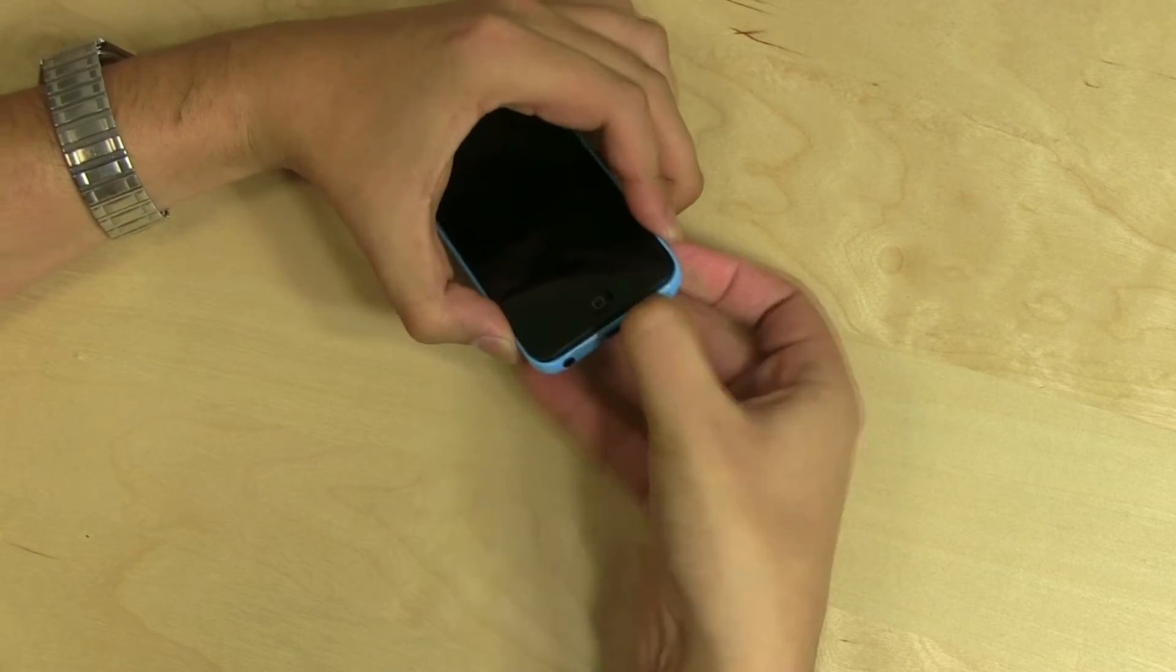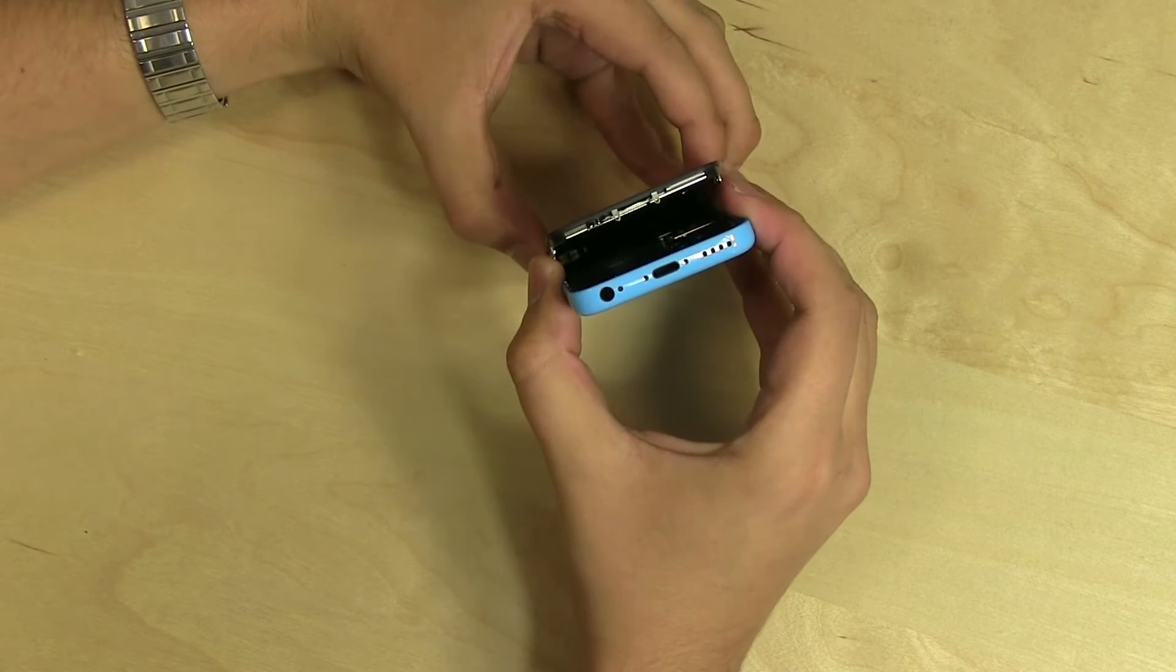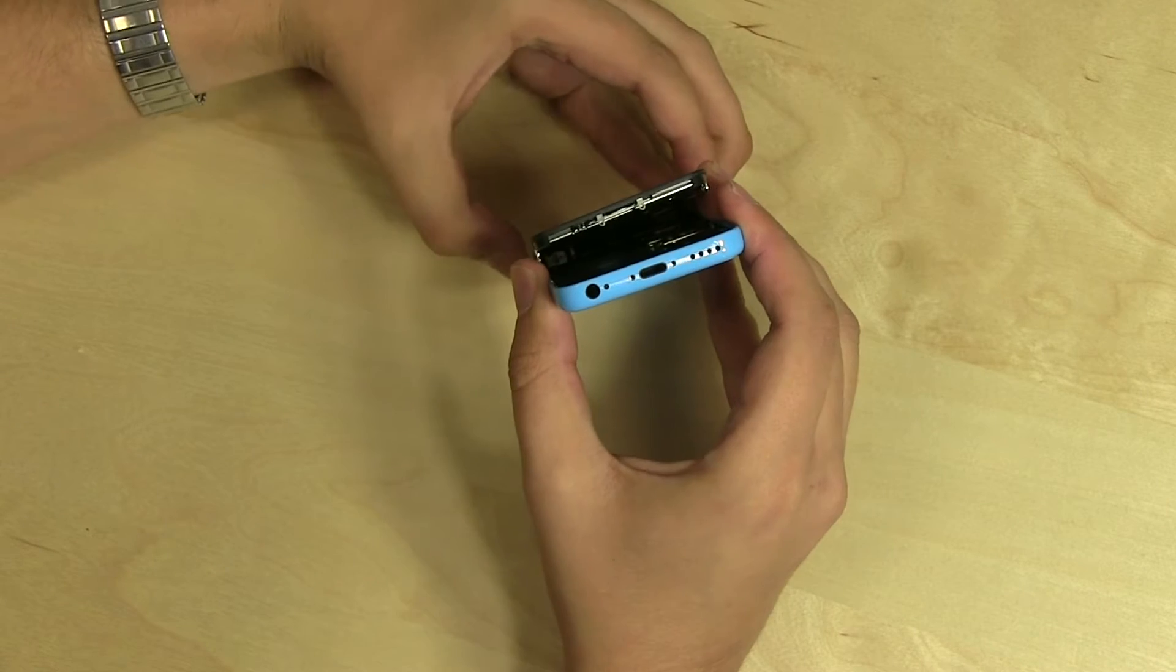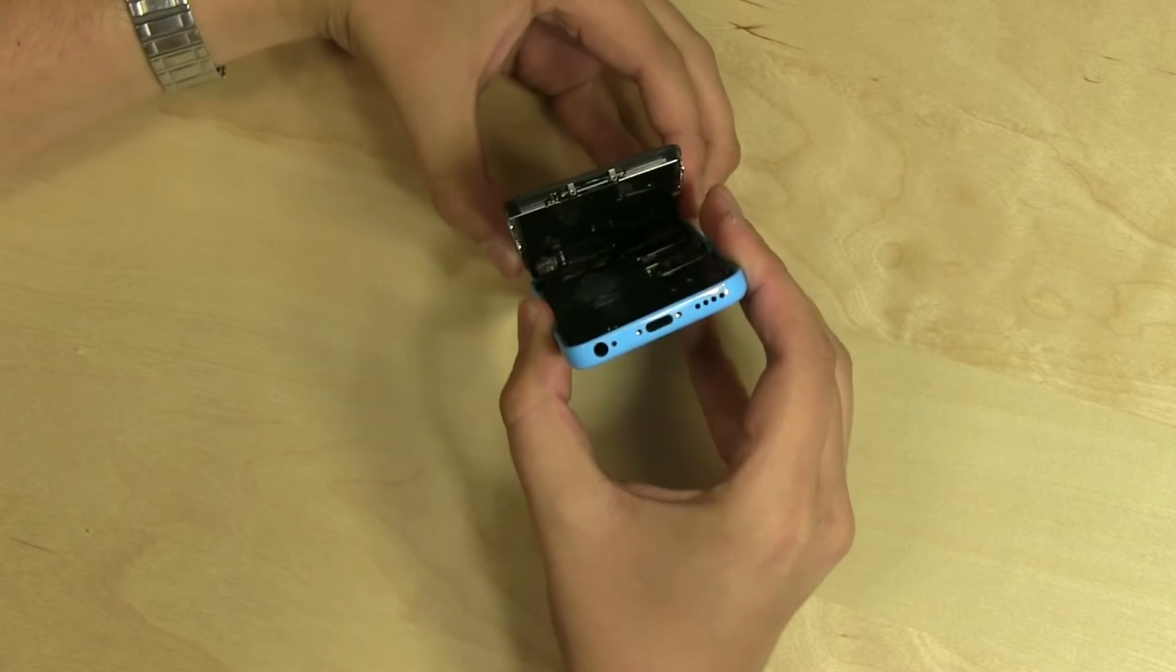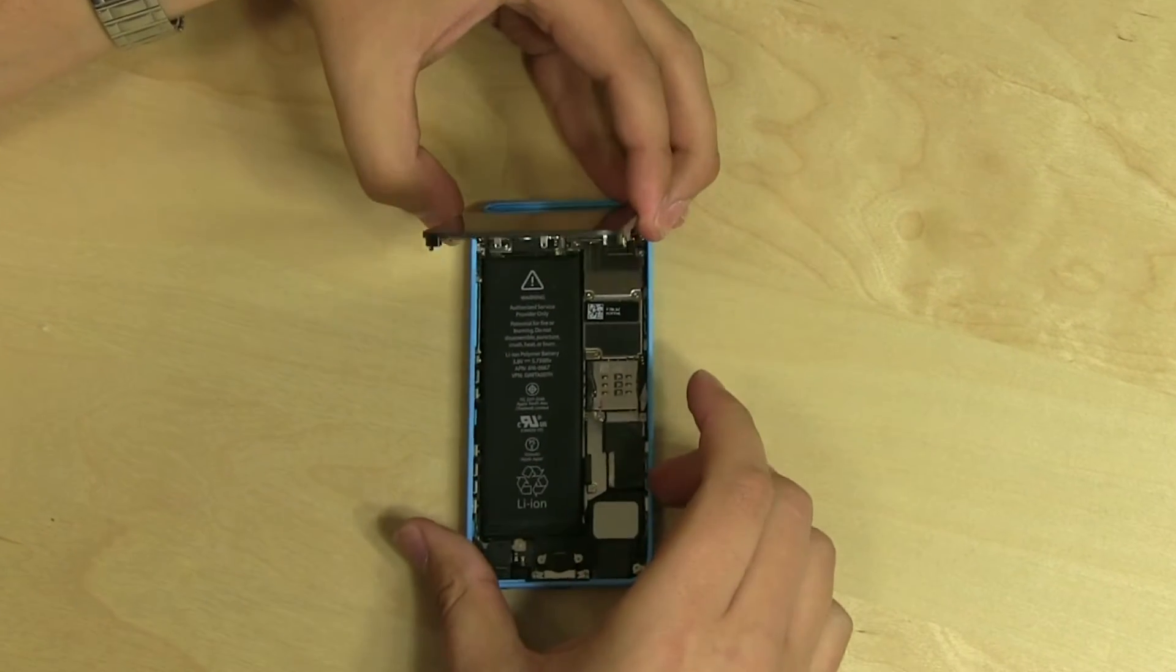Pick open the bottom edge of the display assembly and open it like a clamshell. Make sure no excess strain is applied to the cables at the top edge.